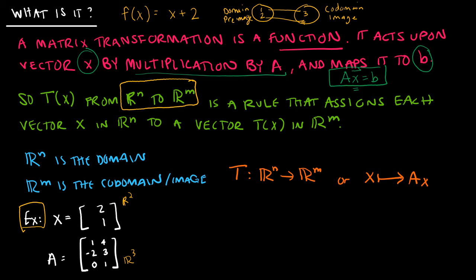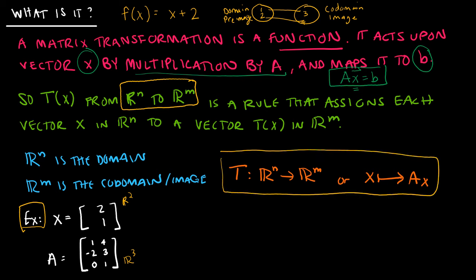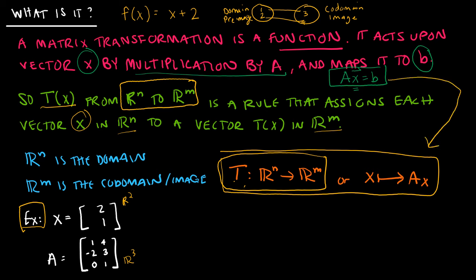Let's talk about the notation. We're looking at T(x) — T(x) is just our function, and we use T because it's a transformation. T(x) is a rule that assigns each vector x in Rn to some vector T(x) in Rm. We write that as T maps from Rn to Rm. Looking back at Ax = b, we might say that x is mapped to A times x.